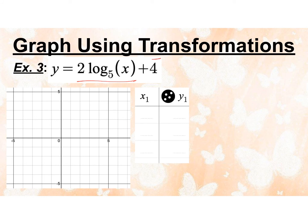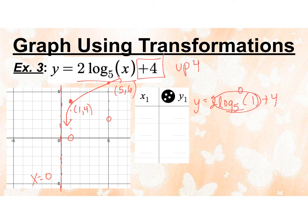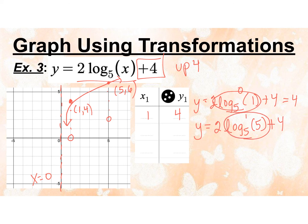Now we're doing y equals 2 log base 5 of x plus 4 — so we're moving the whole thing up 4. It's not going to change my asymptote, so that stays at x equals 0. My previous points were 1, 0 and 5, 2, so I'll move those up 4 to get 1, 4 and 5, 6. Let's verify: y equals 2 log base 5 of 1 plus 4 — log base 5 of 1 is 0, times 2 is 0, plus 4 equals 4. So 1, 4 is confirmed. And y equals 2 log base 5 of 5 plus 4 — log base 5 of 5 is 1, times 2 is 2, plus 4 is 6. So 5, 6 is confirmed.